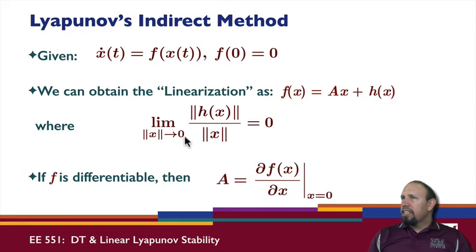Where h of x satisfies this relationship. So when we do our linearization, for example, taking the gradient of f with respect to x, evaluated at the equilibrium condition, we actually can show that f is equal to A times x, and then there's an h of x, which is actually equal to f of x minus A of x. And because of the way A is formed in that process, we can go through and show that h of x satisfies this relationship.